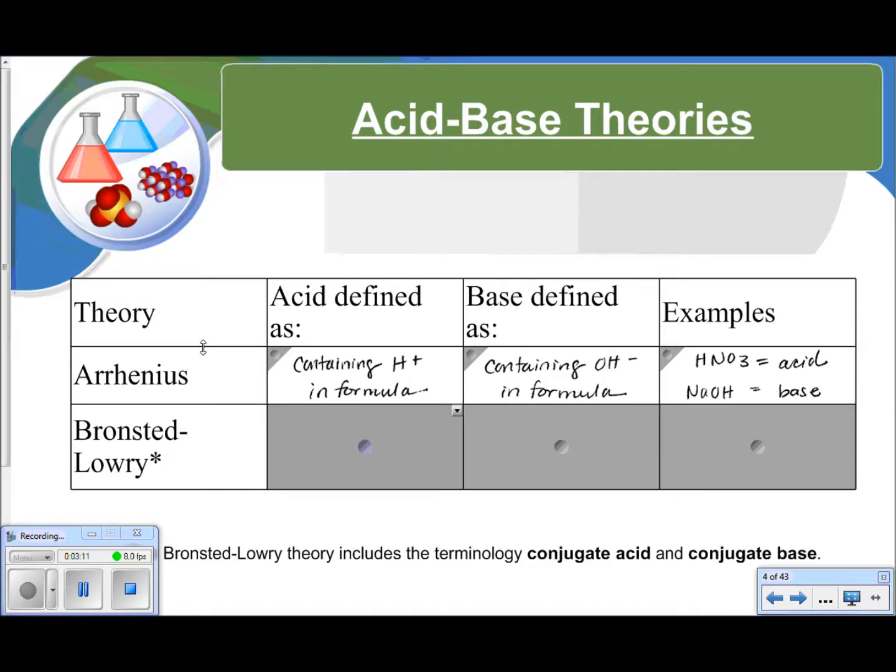Now, there's also the Bronsted-Lowry theory, which says that an acid is a hydrogen donor and a base is a hydrogen acceptor. So this describes hydrochloric acid as an acid because it will donate its hydrogen. And then here we have ammonia as a base, which is not a hydroxide. However, it does accept hydrogen ions. So the Bronsted-Lowry theory includes the terminology conjugate acid and conjugate base.